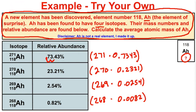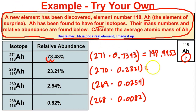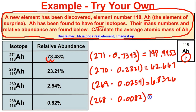Get your calculators out and let's put these numbers in. What we get for the first one is 198.9953. For the second one: 62.667. For the third: 6.8326. And for the last one: 2.1976.